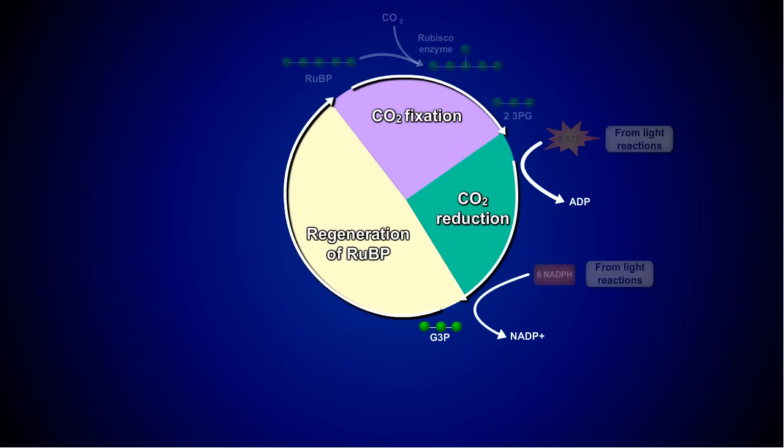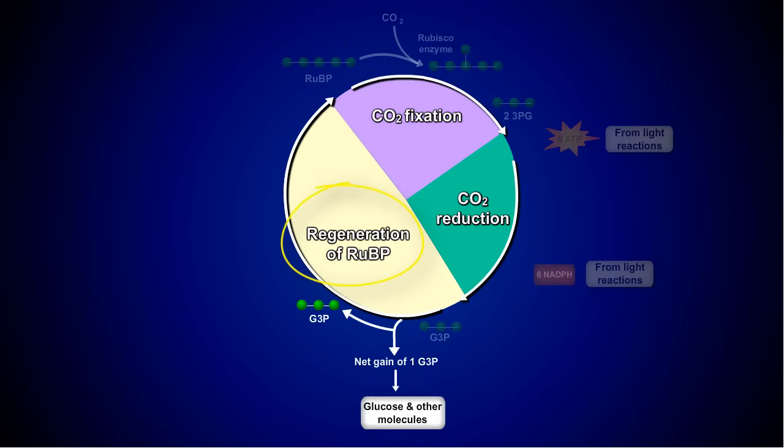ADP and NADP+ return to the thylakoids to be converted back to ATP and NADPH by the light reactions. One of the G3P molecules is set aside to be used as a building block for glucose, but the majority of the G3P molecules move forward into the third phase of the Calvin cycle.